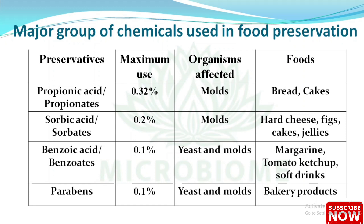Major groups of chemicals used in food preservation: Propionic acid — maximum use 0.32%, affects molds, used in bread, cakes, and hard cheese. Sorbic acid or sorbates — maximum use 0.2%, affects molds, used in cakes and jellies. Benzoic acid or benzoates — maximum use 0.1%, affects yeast and mold, used in margarine, tomato ketchup, and soft drinks. Parabens — maximum use 0.1%, affects yeast and mold, used in bakery products.